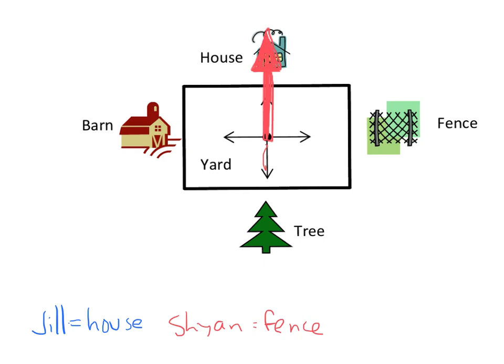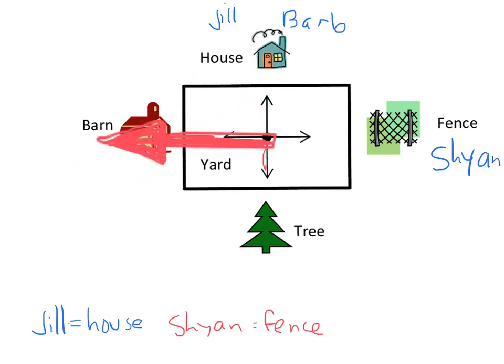So interestingly enough, Jill ends up at the house and so does Barb. And then Cheyenne ends up at the fence. Now the thing that I think is kind of cool here is that Jill and Barb both ended up at the house, but they got there in two different ways. Jill, she just went 90 degrees to the right. But Barb did 270 degrees to the left. And they both end up at the exact same location. I think that's kind of cool. Let's move on.